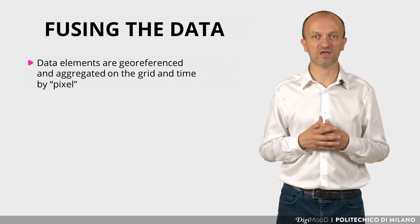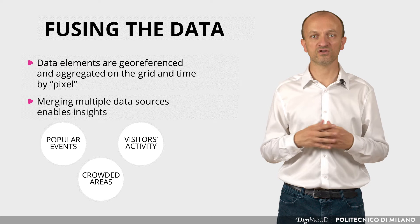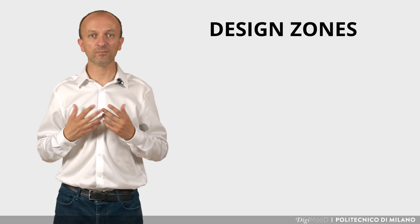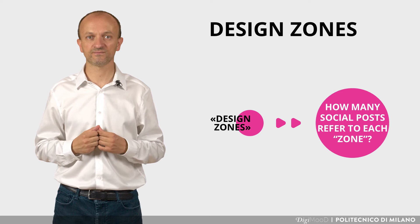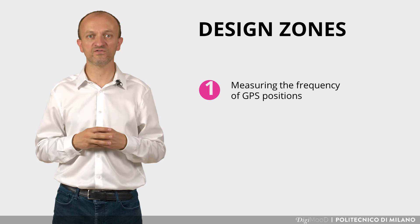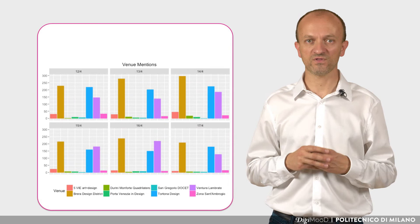All these elements are integrated along the temporal and geographical dimension, so as to enable getting insights on the most popular events, the most crowded and appreciated areas of the city, and the communication strategies of visitors on social media. Zone popularity can be measured by the frequency of GPS positions of visitors, the amount of social media posts in each zone, or the mentions of the zones within the social media posts.